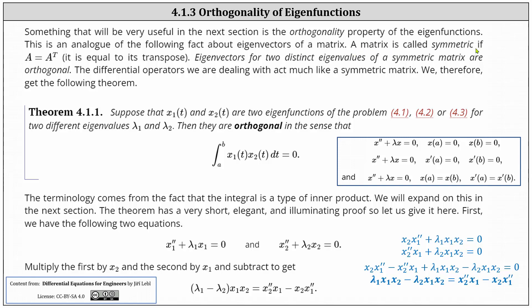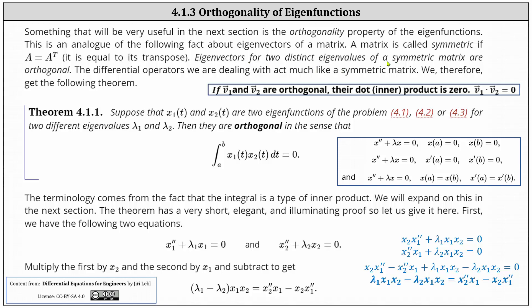A matrix is called symmetric if matrix A is equal to the transpose of matrix A. Recall that to find the transpose of a matrix, we interchange the rows and columns. The eigenvectors of two distinct eigenvalues of a symmetric matrix are orthogonal — recall that vectors that are orthogonal are perpendicular.